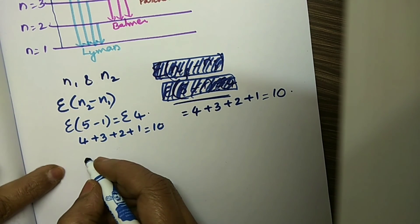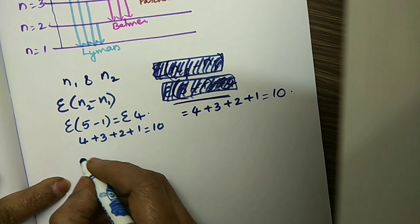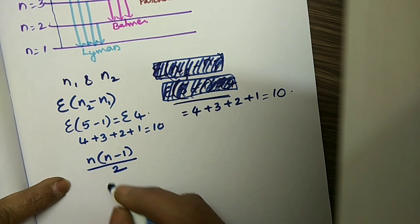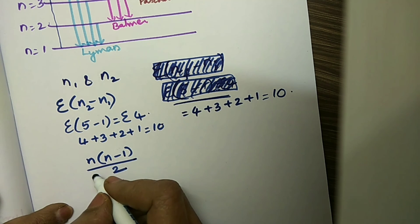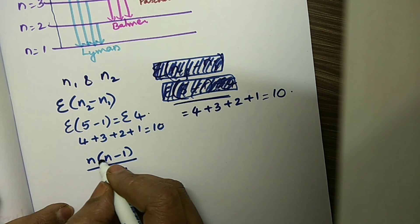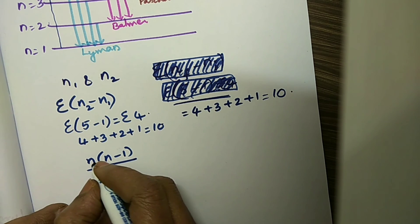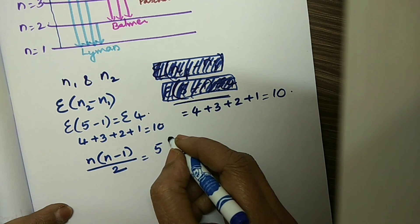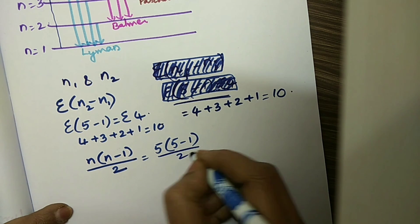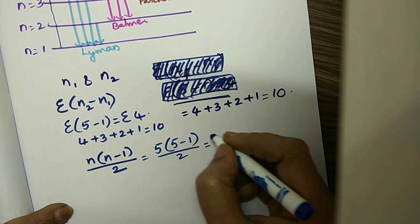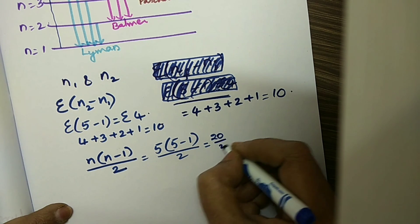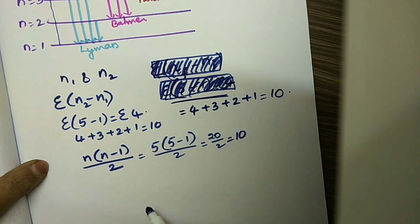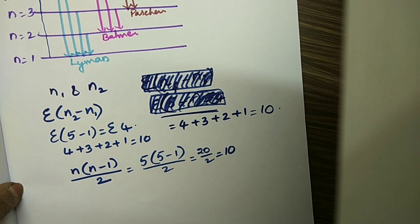We can use one more formula: n times (n minus 1) divided by 2, where n is the highest principal quantum number from which the electron is coming — here n equals 5. So 5 into (5 minus 1) by 2 equals 5 into 4 divided by 2 equals 20 by 2, which equals 10. Using both these formulas, we can get the number of spectral lines obtained in electronic transitions.